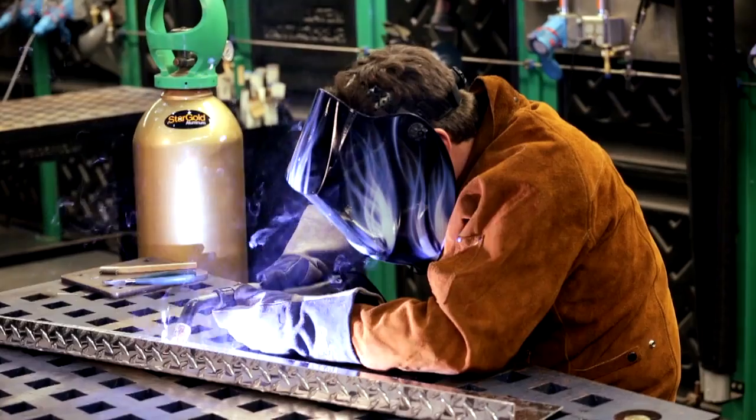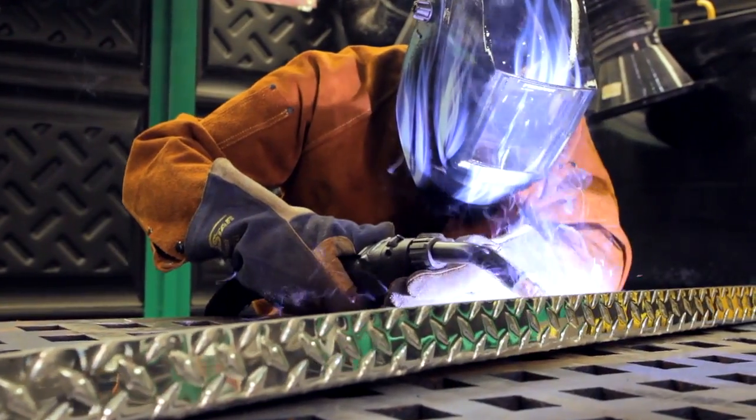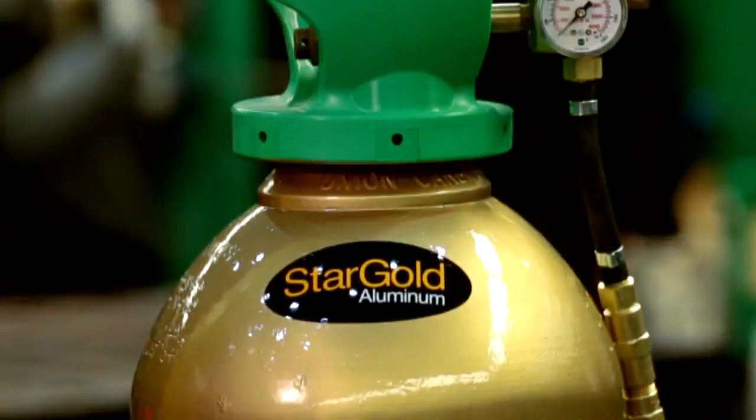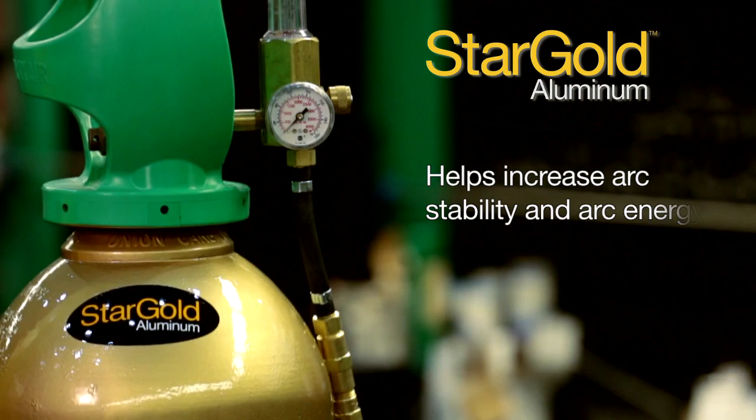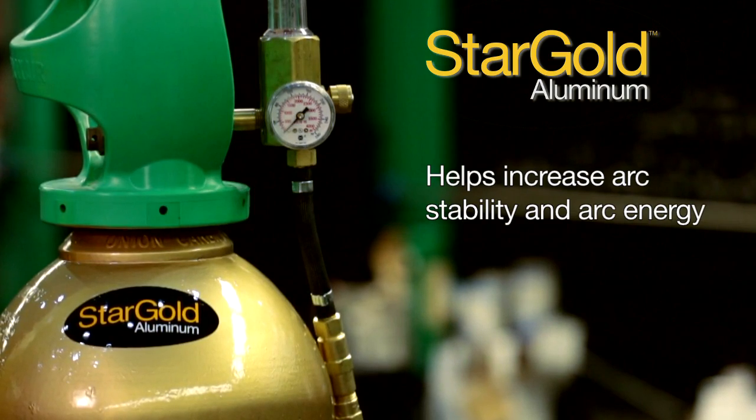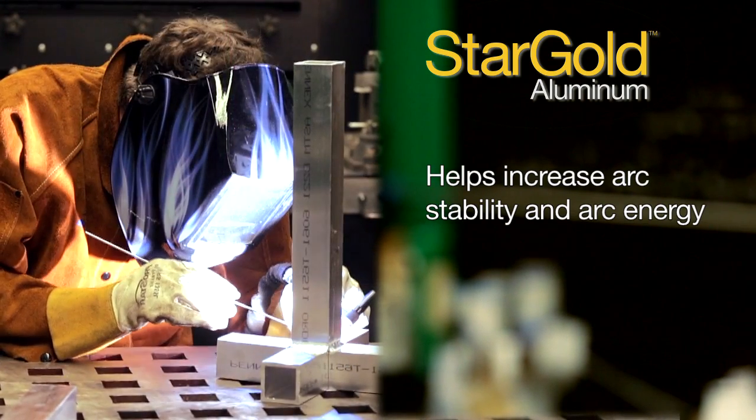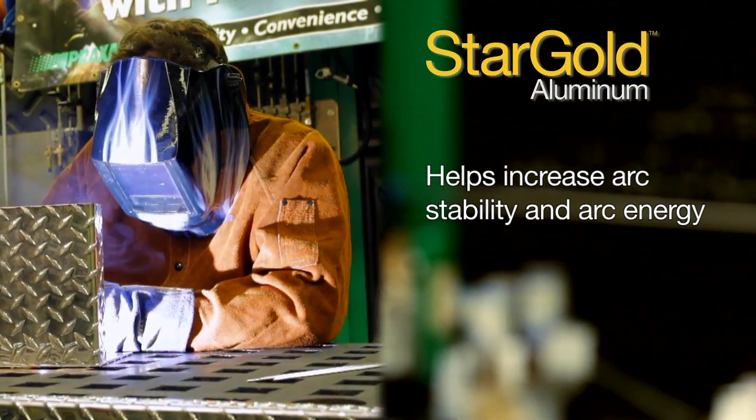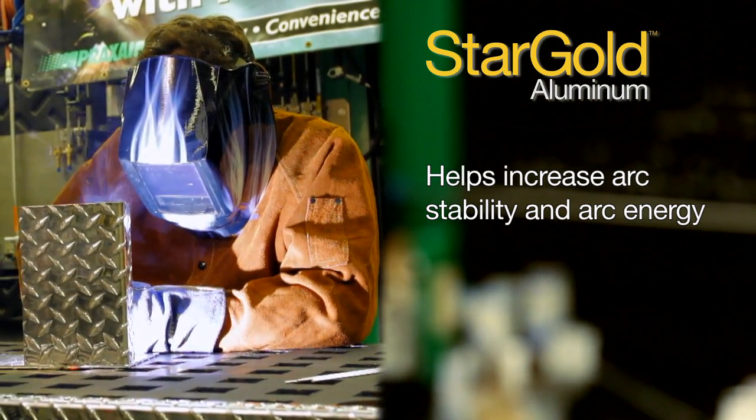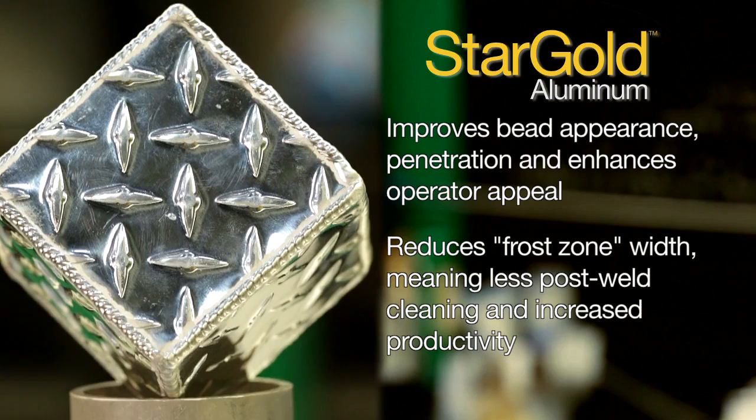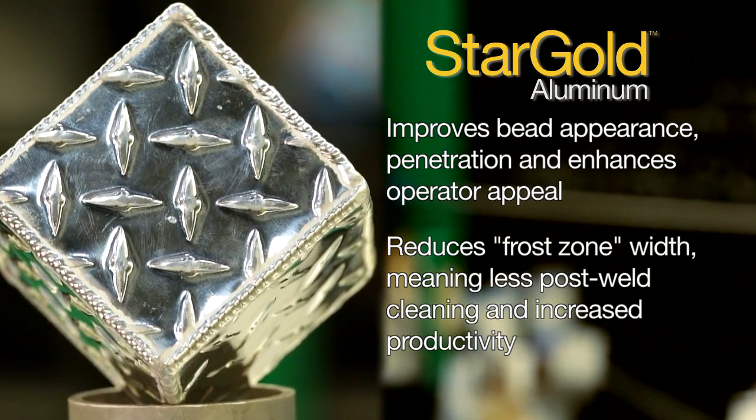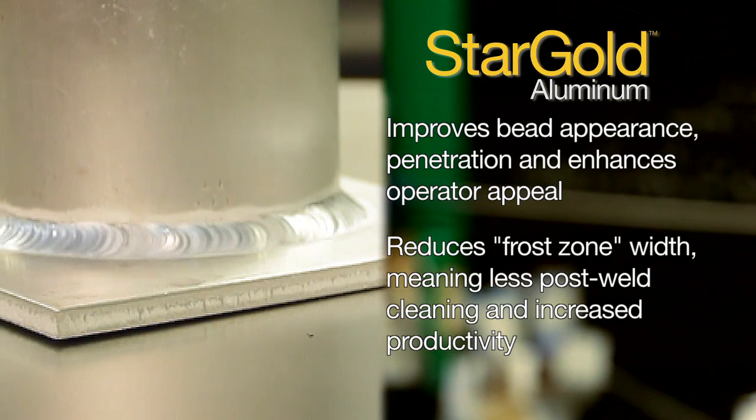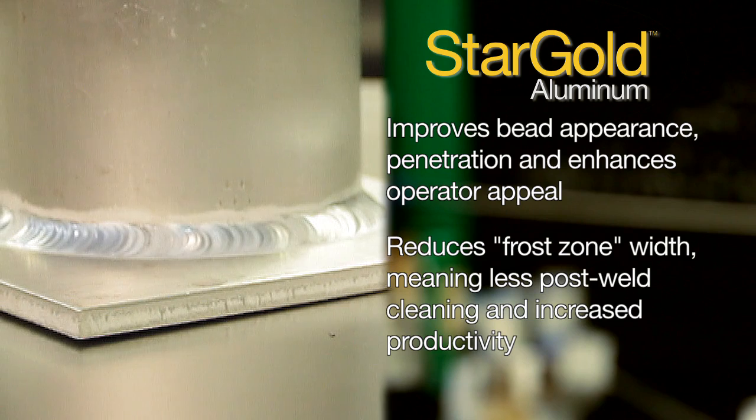This blend is also well suited for MIG welding a wide range of aluminum alloys. Stargold Aluminum helps provide greater arc stability with enhanced weld puddle fluidity. By increasing arc stability, arc energy, and overall arc performance, Stargold Aluminum can help improve bead appearance, reduce arc wander, and provide better weld penetration in a wide range of aluminum joining applications.